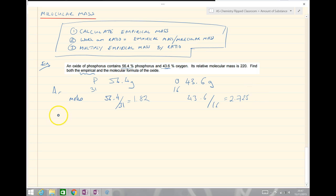Divide through by the smallest number which is 1.82 to get the ratios. You should find 2.725 over 1.82 is 1.497 which is pretty close to 1.5, not going to get much closer. Therefore our empirical, remember is the simplest whole number ratio, so we multiply both by 2 and we'll end up with P2O3. So there is our empirical formula.